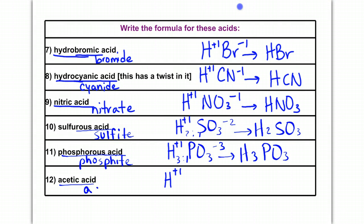Acetic acid is acetate, which is C2H3O2 with a minus-one. The plus-one and minus-one cancel, giving me HC2H3O2.